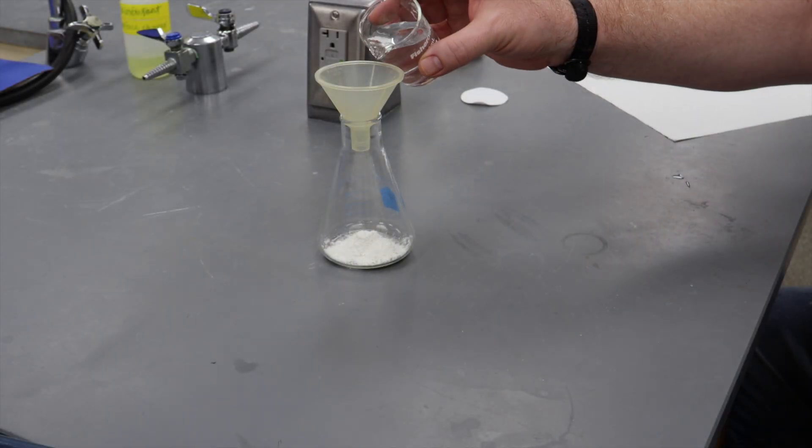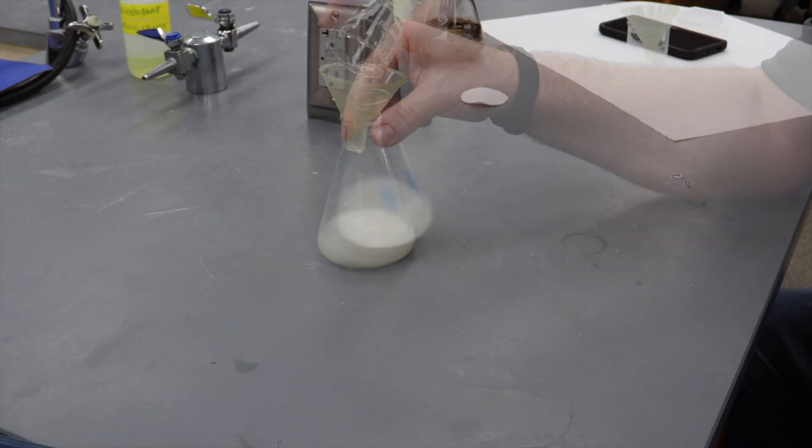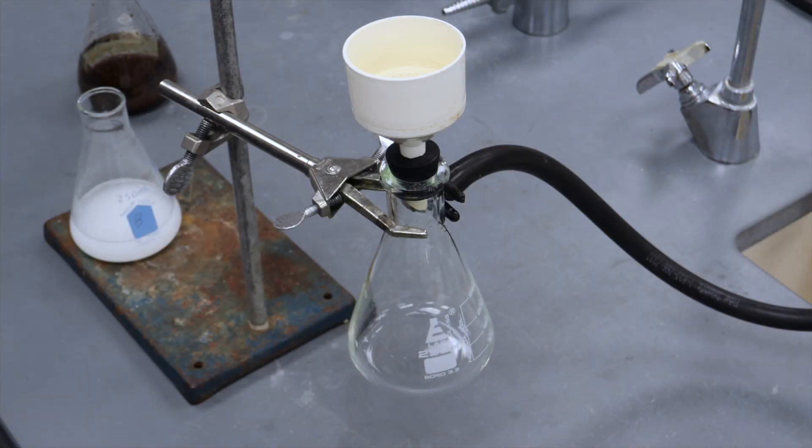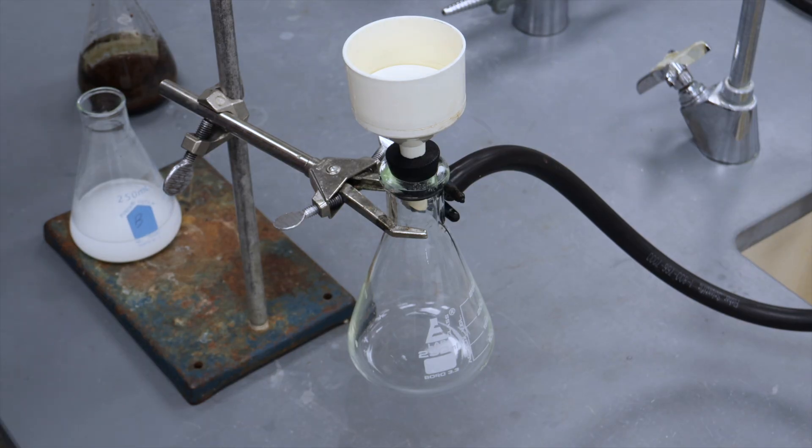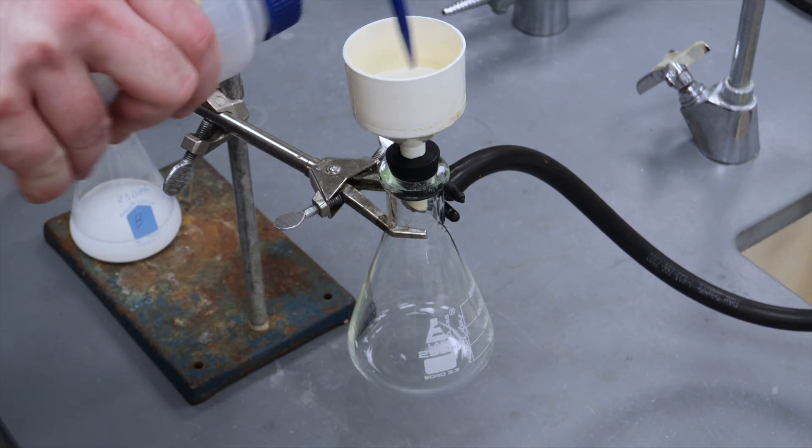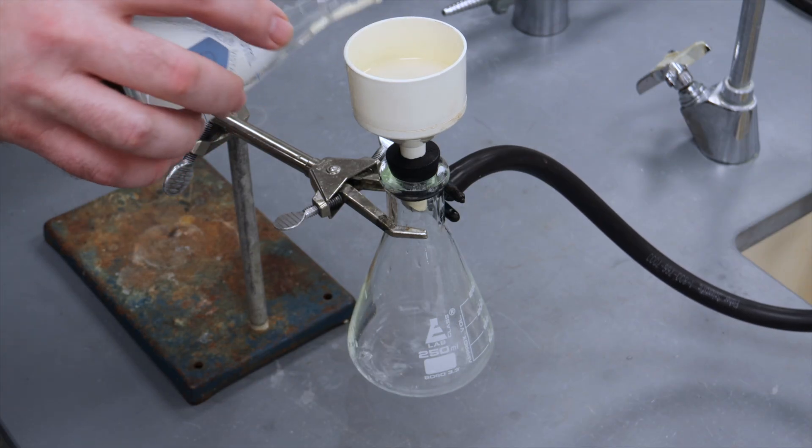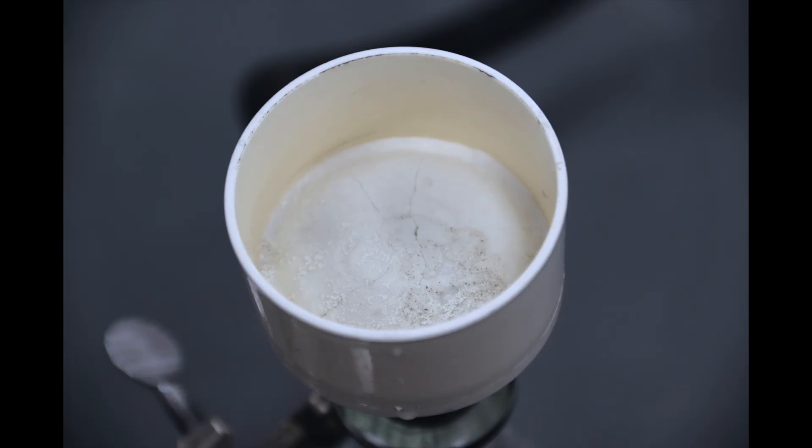To prepare the filter aid, you need to create a slurry of your solvent and the diatomaceous earth. Next, set up your vacuum flask, Buechner funnel, and filter paper so that no solid can get through the Buechner funnel. Then, carefully pour your sea light slurry through the filter paper. You want to make sure that you get a nice, even filter cake made up entirely of your filter aid.